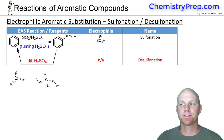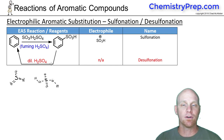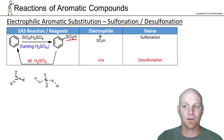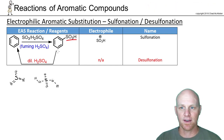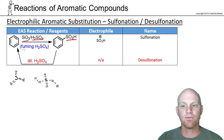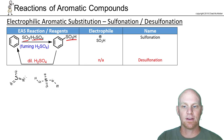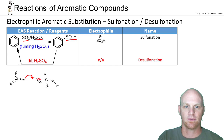The next EAS reaction we're going to look at is called sulfonation, where we add a sulfonate group. In this case we're mixing SO₃ (sulfur trioxide) with sulfuric acid, and that combination is called fuming sulfuric acid. We need to talk about how this electrophile forms, which is simply an acid-base reaction — one of the oxygens in sulfur trioxide gets protonated by sulfuric acid.